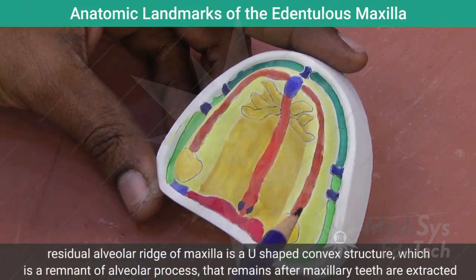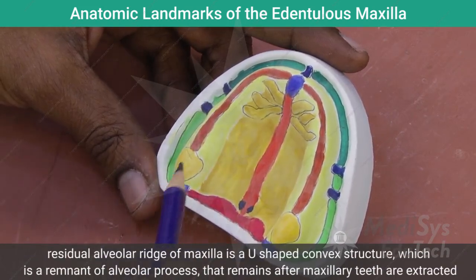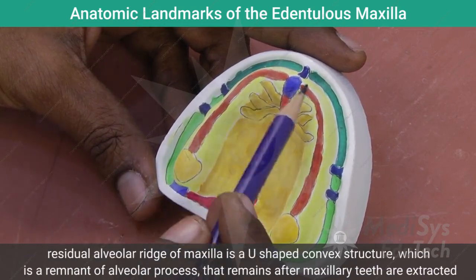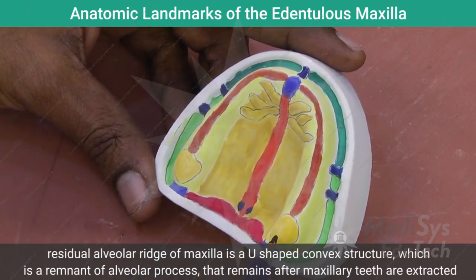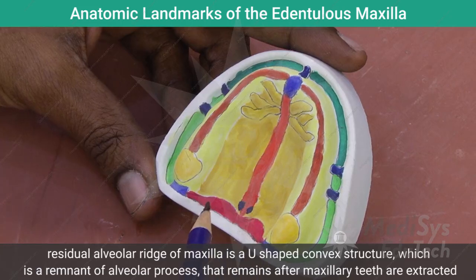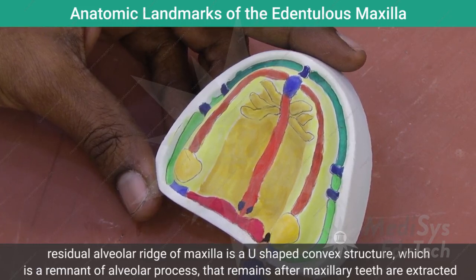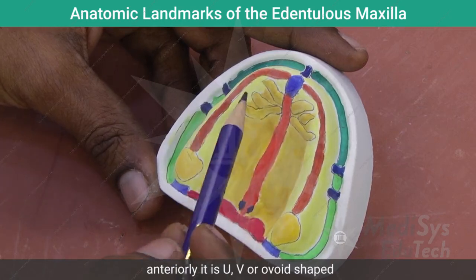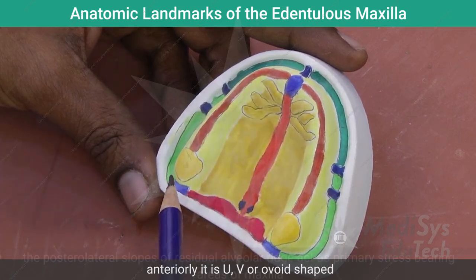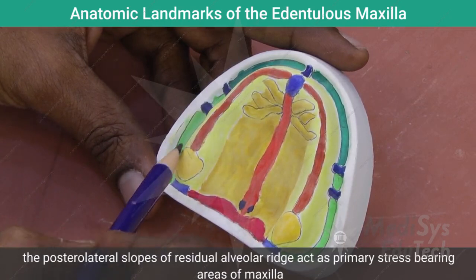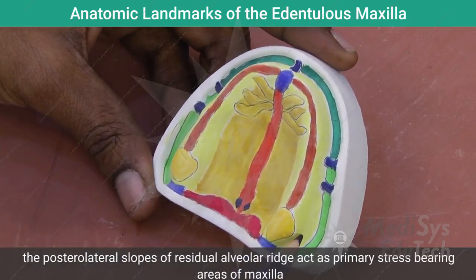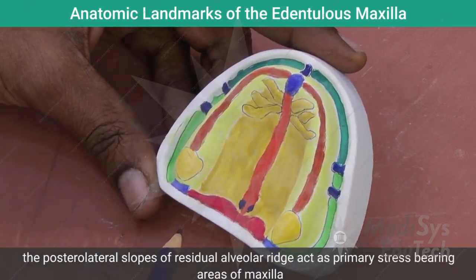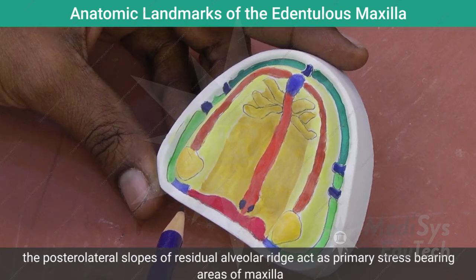The residual alveolar ridge of the maxilla is usually a U-shaped convex structure that is a remnant of the alveolar process which remains after the maxillary teeth are extracted. Anteriorly it can be U-shaped, V-shaped, or ovoid. The posterior lateral slopes of this residual alveolar ridge act as primary stress bearing areas of the maxilla.